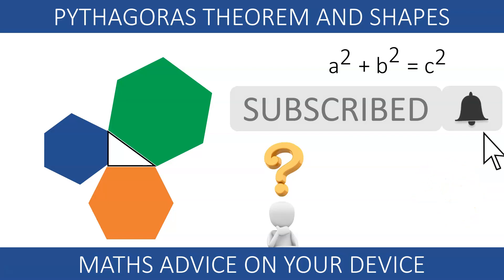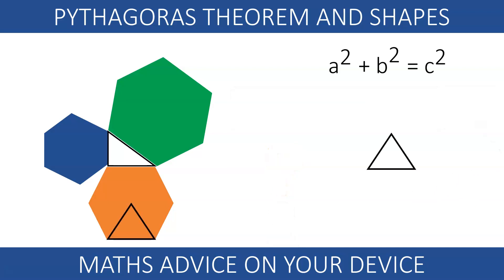Right! Let's look at the orange hexagon for example. It can be split into 6 equilateral triangles. If we zoom in, we can see that each triangle has a base of 4 and a height found using Pythagoras.